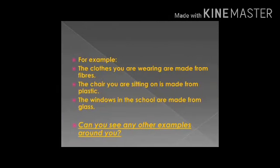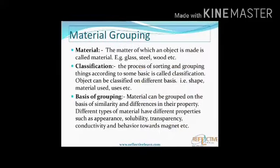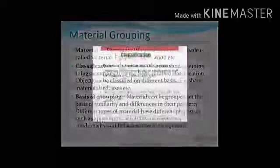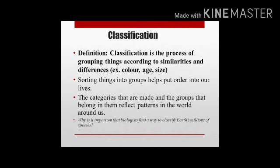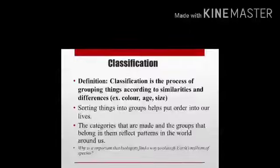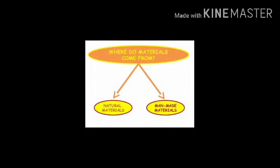हमारे चारों तरफ सभी चीज़े किसी न किसी material के बने हैं। जैसे जो कपड़े हम पहनते हैं वो fibers के बने होते हैं, chair plastic या wood की बनी होती है, और windows glass की बनी होती हैं। Material वो matter है जिससे object बना हो — जैसे glass, steel, wood, plastic। इन materials को इनकी properties के basis पे अलग करना classification कहलाता है — यह process things को उनकी similarities या dissimilarities के basis पे group करता है।